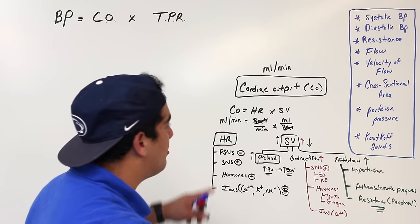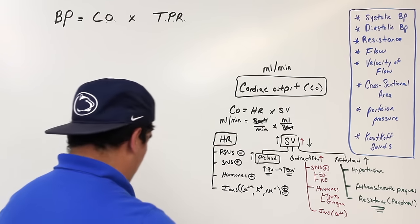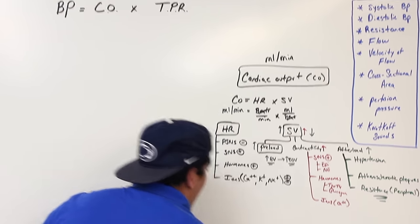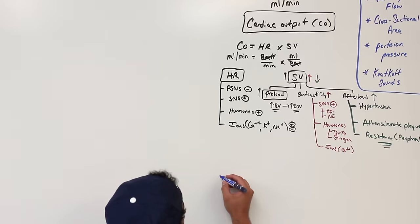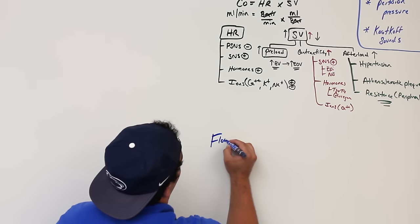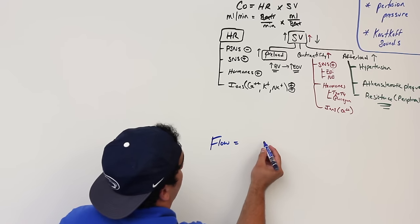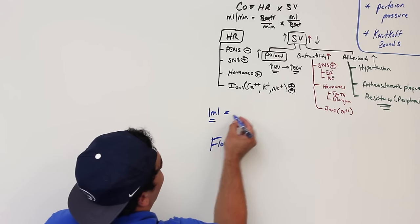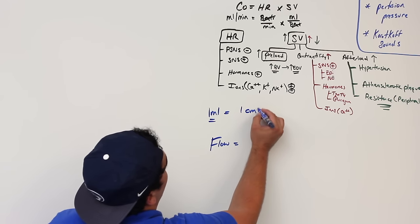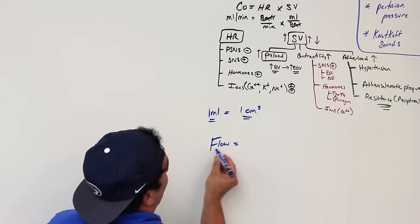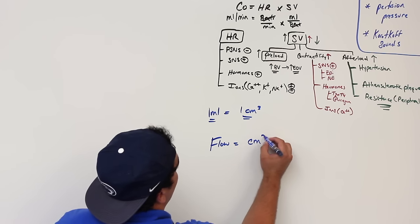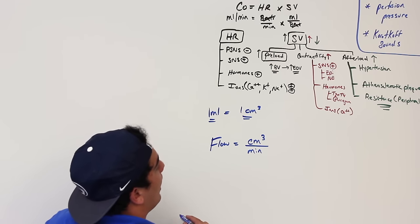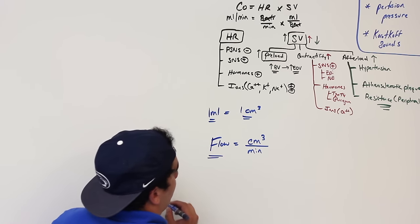This is very similar to another important formula: flow. Flow is defined as the volume of blood, and since one milliliter equals one centimeter cubed, flow is in units of centimeters cubed per minute — which is essentially milliliters per minute, very similar to cardiac output.